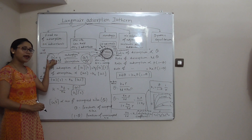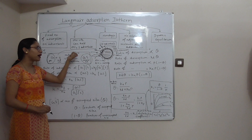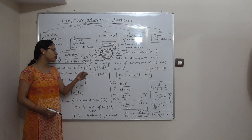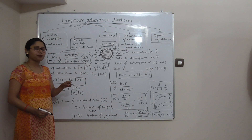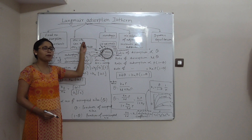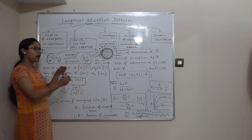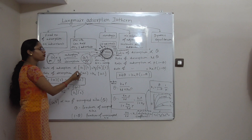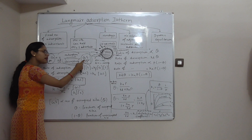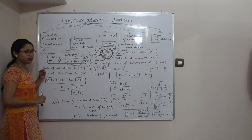G is the gas, S is the number of sites. When they combine, this process is called adsorption and the substance formed is called the adsorbed substance. Because we have dynamic equilibrium, the reverse process also occurs — some molecules attach and some detach. GS, the adsorbed substance, undergoes desorption and molecules come back to the individual gaseous form.